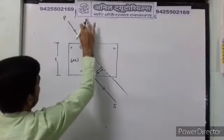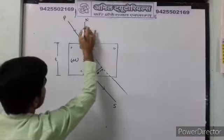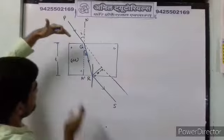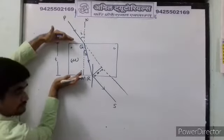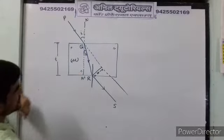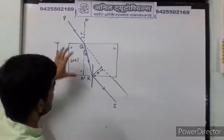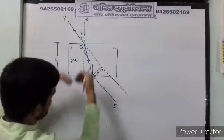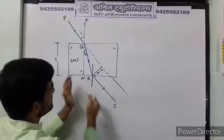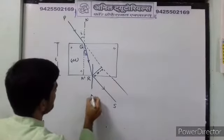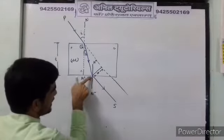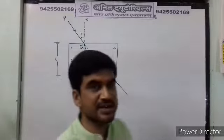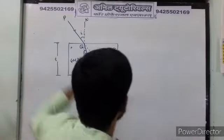When the ray enters from rarer to denser medium, it moves towards the normal. When it comes from denser to rarer medium, it moves away from the normal. Here is the normal N double prime. The lateral shift X is the perpendicular distance between the emergent ray and the original incident ray direction, and we will calculate it in terms of the width T of the glass slab.